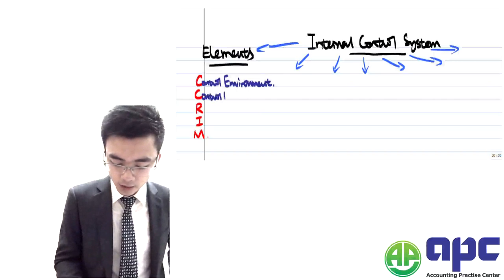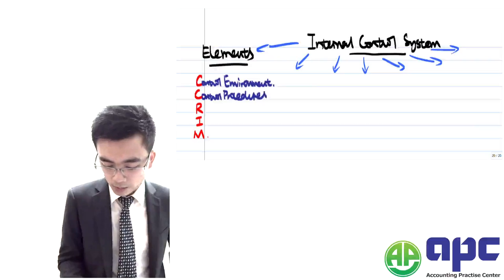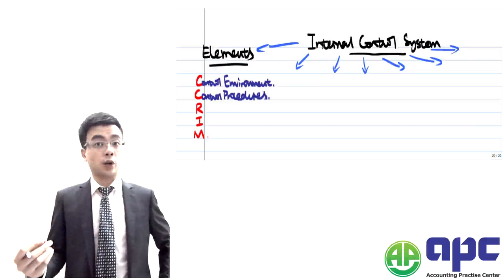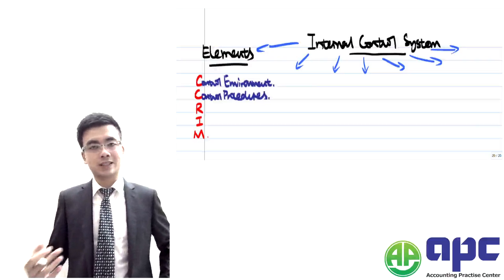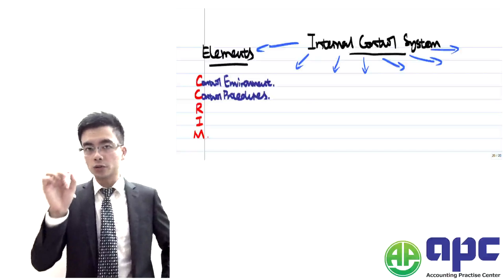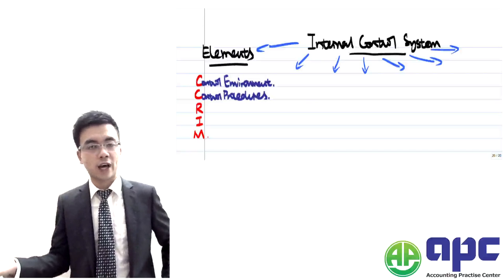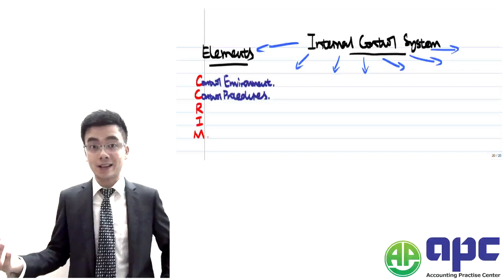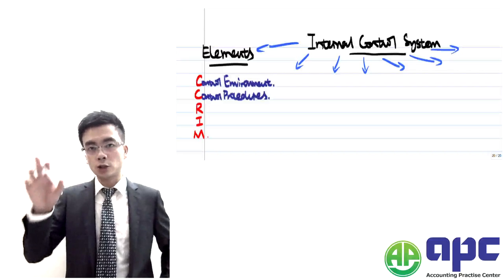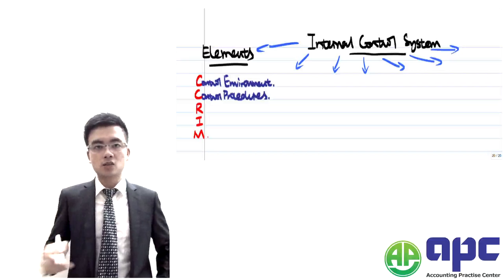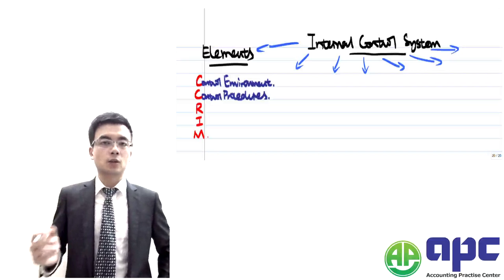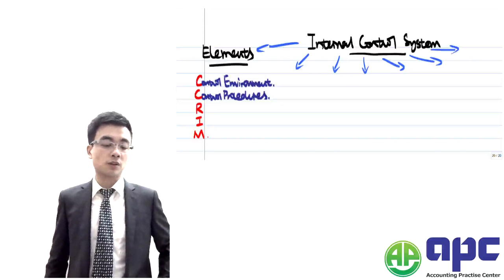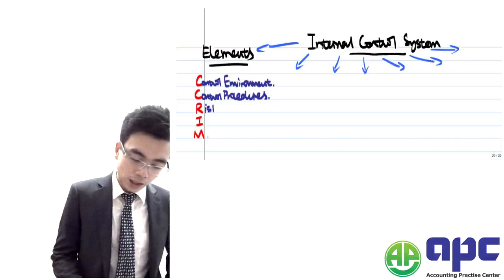Secondly, it's the control procedures in place to make sure that the business will not go wrong. For example, how can you make sure that staff, especially the cashier, will not steal money from the company? Maybe you're going to prepare the bank reconciliation statement monthly to reconcile the bank balances, making sure that the bank balance is correct.